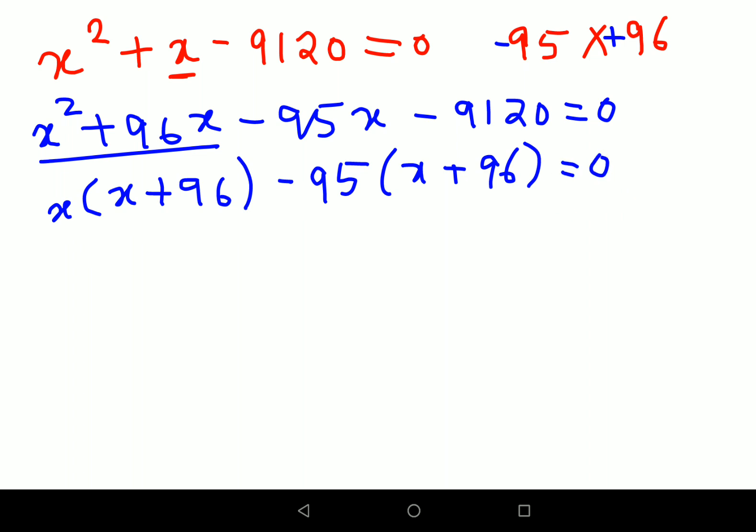Whenever you're doing this taking the common part, you need to realize that if both these brackets are same, then you're doing it the right way. So now let's take the entire bracket common. We will have (x + 96)(x - 95) = 0. So now this much is done.